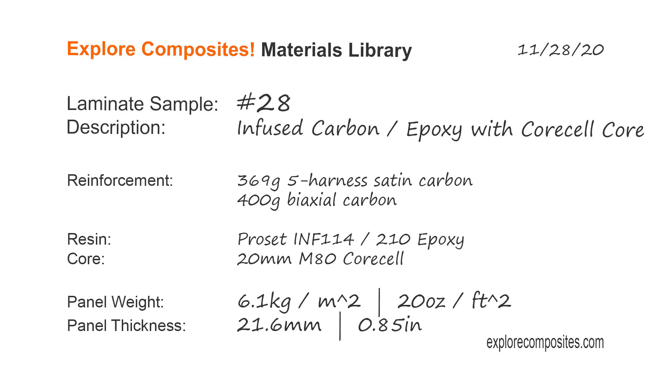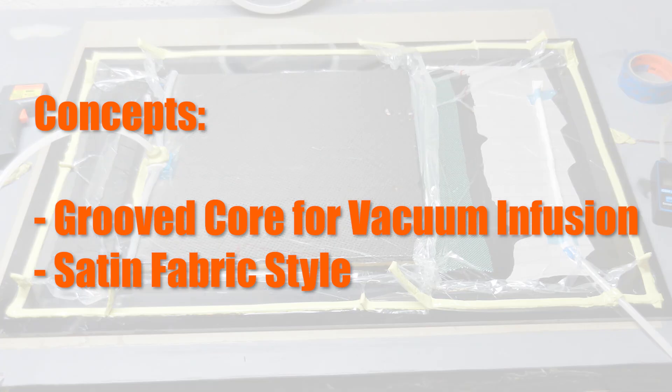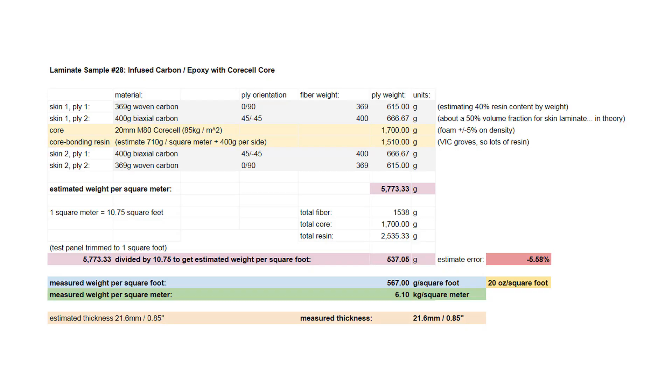Welcome to the Explore Composites materials library. This is laminate sample number 28. This one is a carbon-skinned core cell cored 21mm thick panel with about 0.8mm skins, it's vacuum infused, and the key concepts here are we're going to use grooved core and the surface ply is a five harness satin woven.